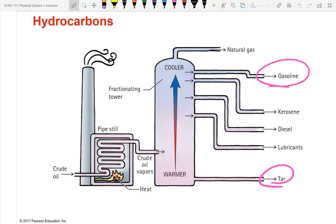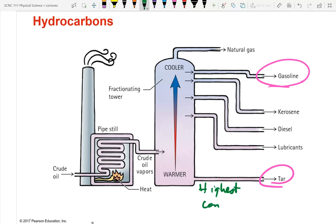Returning to hydrocarbons, the teacher reviews fractional distillation: oil is separated into different components based on the temperature at which each condenses. Tarry substances condense at the highest temperatures, while gasoline condenses at the lowest.